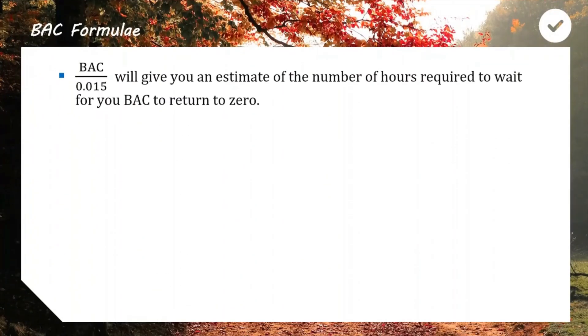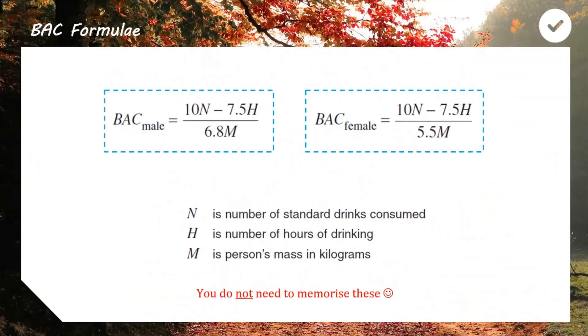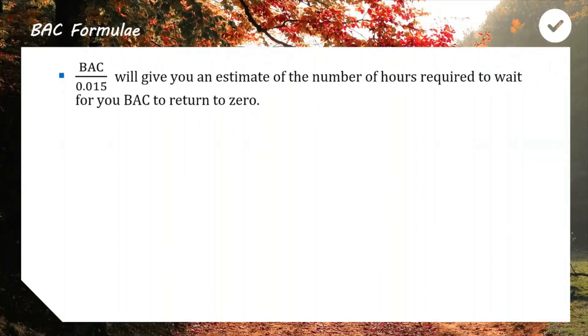Let's dive into how to calculate when your BAC is going to return to zero. We have another formula for an estimation. If you take a person's BAC, so 0.05, 0.0 whatever, and you divide it by 0.015, you will get a number, and that number will be the estimate of how many hours you need to wait for your BAC to go back to zero, which for learners and P-platers means that you can then drive again. So we'll be using these formulas today, and it's not a case of memorizing, it's just understanding and applying.